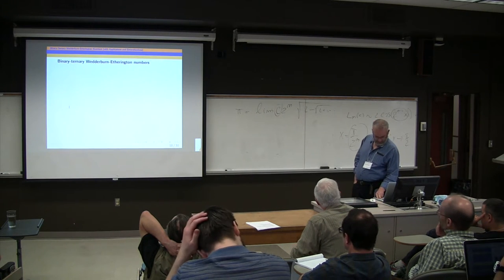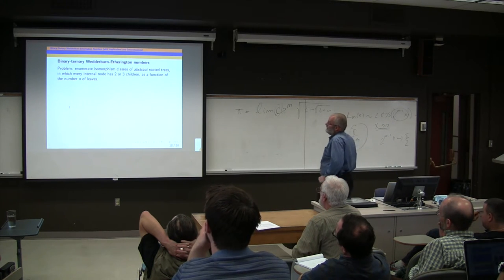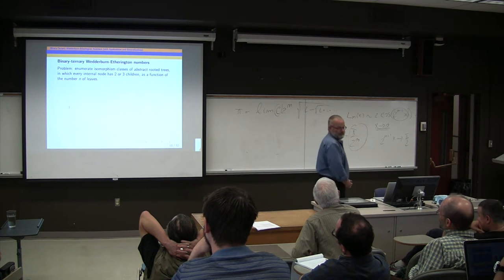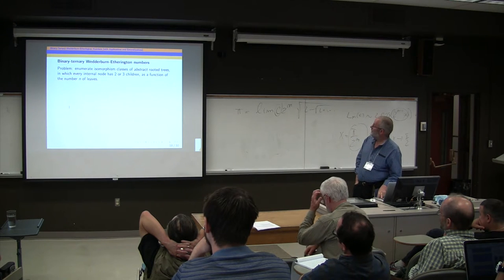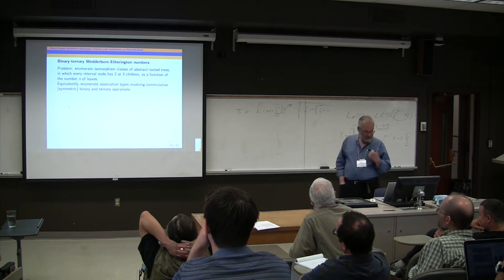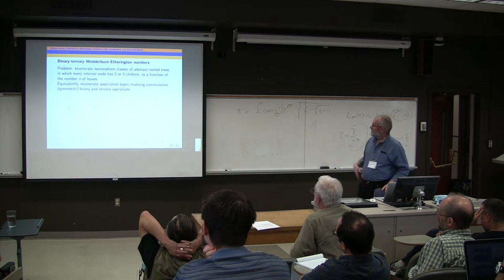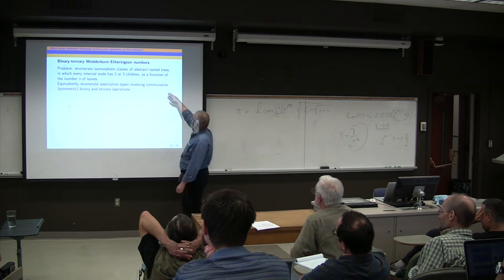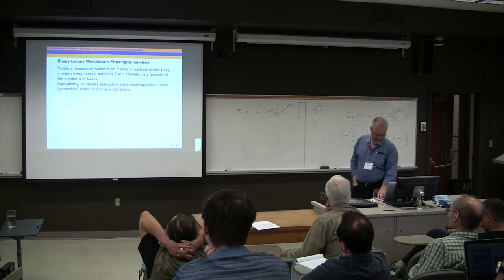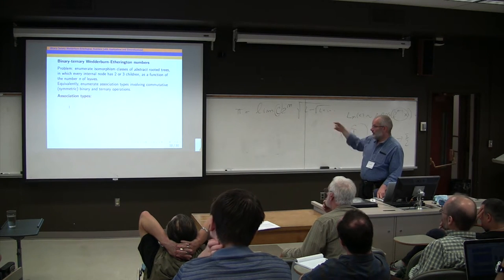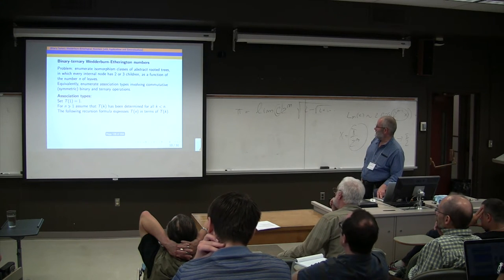Okay, now we're getting to the main point of the talk. Binary, ternary, Wedderburn-Etherington numbers. So we want to enumerate isomorphism classes of abstract rooted trees in which every internal node has two or three children, as a function of the number of leaves. Equivalently, enumerate association types involving commutative binary and ternary operations. So that was actually the question that I originally asked myself, coming from non-associative algebra. Enumerate those possible association types, or enumerate the corresponding multilinear monomials.